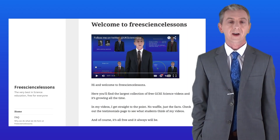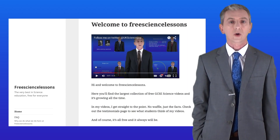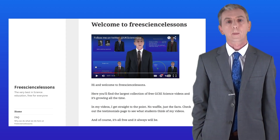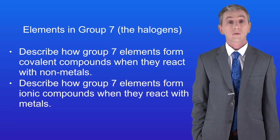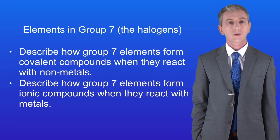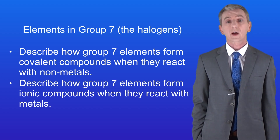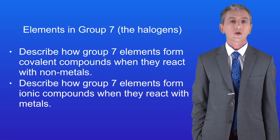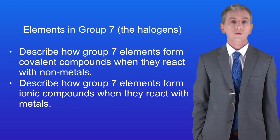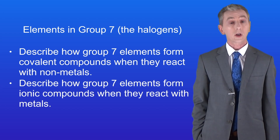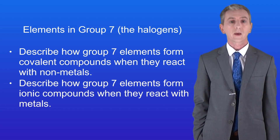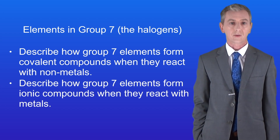Hi and welcome back to freesciencelessons.co.uk. By the end of this video you should be able to describe how Group 7 elements form covalent compounds when they react with non-metals. You should then be able to describe how Group 7 elements form ionic compounds when they react with metals.